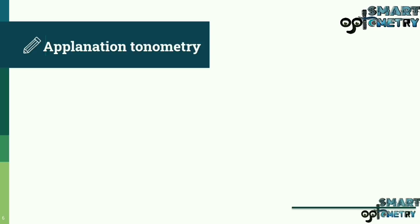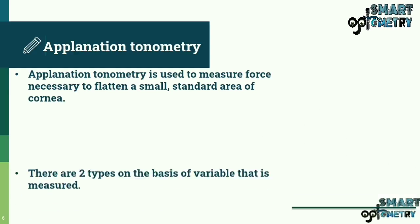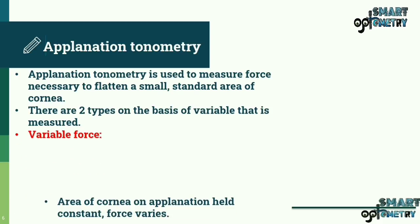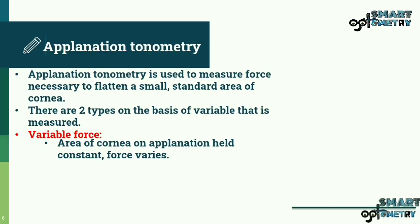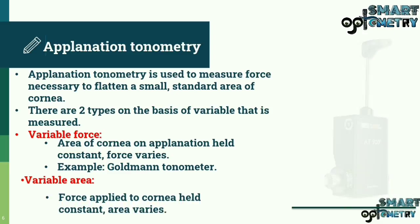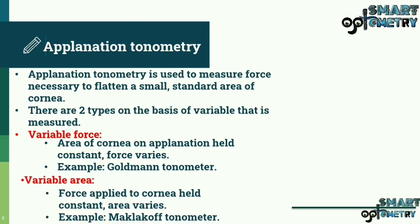Applanation Tonometry is used to measure the force necessary to flatten a small standard area of the cornea. There are two types based on the variable that is measured. In variable force type, the area of cornea on applanation is held constant while force varies — e.g., the Goldmann Tonometer. In variable area type — e.g., the Maklakov Tonometer.